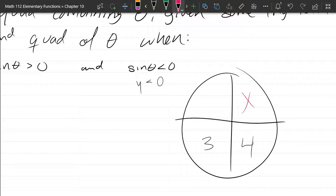So I'm gonna go ahead and just cross out one and two because if sine is negative, you are not in one or two. You're definitely in three or four.